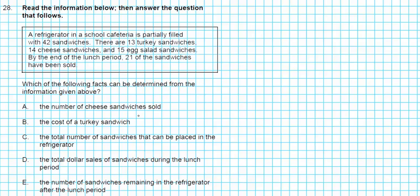Option number one says the number of cheese sandwiches sold. There were a total of 21 sandwiches sold. How many of them were cheese sandwiches? It is not indicated. So the type of sandwiches sold is an unknown. This cannot be determined. The cost of a turkey sandwich. Look at this problem, all we have are quantities. We have quantities only, no cost. Eliminate that option.